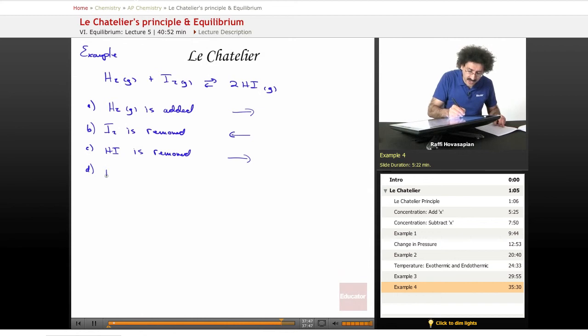Part D, argon is added. Argon gas. Well, argon is a noble gas. It is inert, so we add an inert gas. Well, if you're adding an inert gas, you're changing the total pressure of the system, but there's not really much that you can do. So in this particular case, nothing is going to happen. No change.